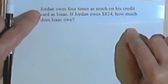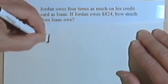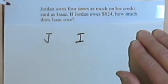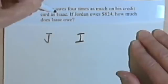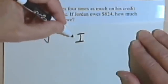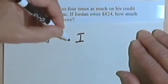We're comparing the amount that Jordan owes with the amount that Isaac owes. So I've got this J for Jordan and an I for Isaac. It says that Jordan owes four times as much as Isaac. So if we multiply the amount of money that Isaac owes by four, we should get the amount that Jordan owes.